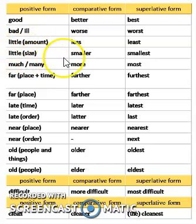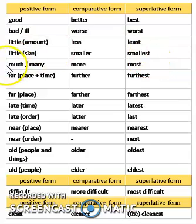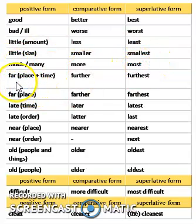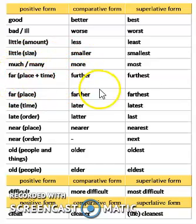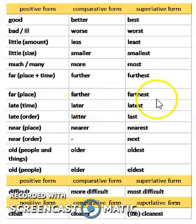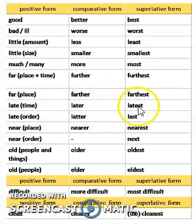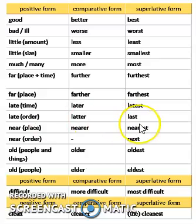When 'little' is used for size, it will be smaller, smallest. Much, more, most. Far — used for place or time usually — far, further, furthest. Also: far, farther, farthest. Late, later, latest. And if 'late' is used in order, it will be late, later, last.